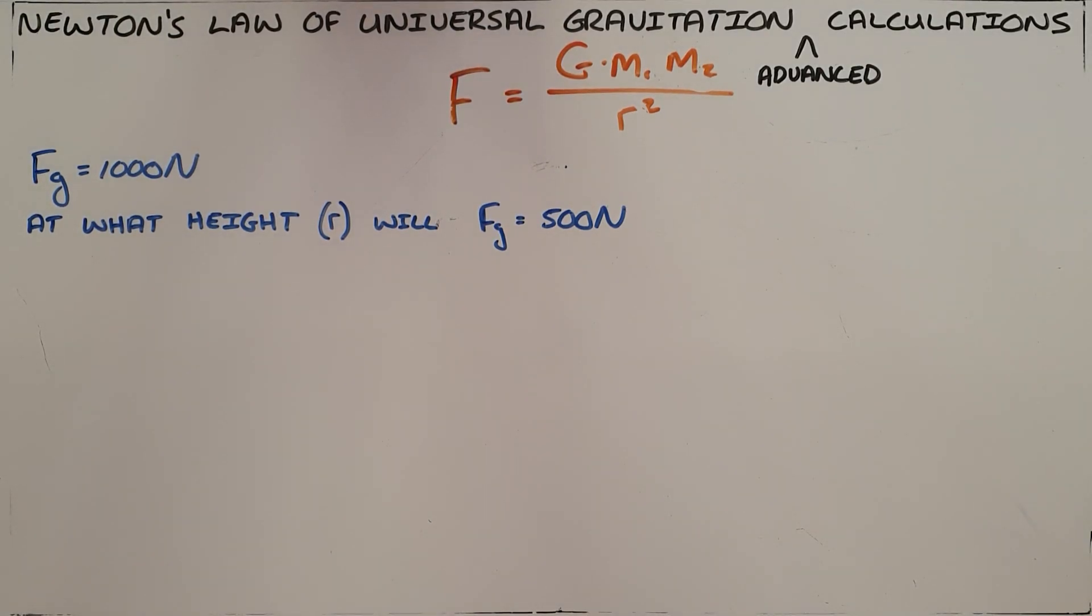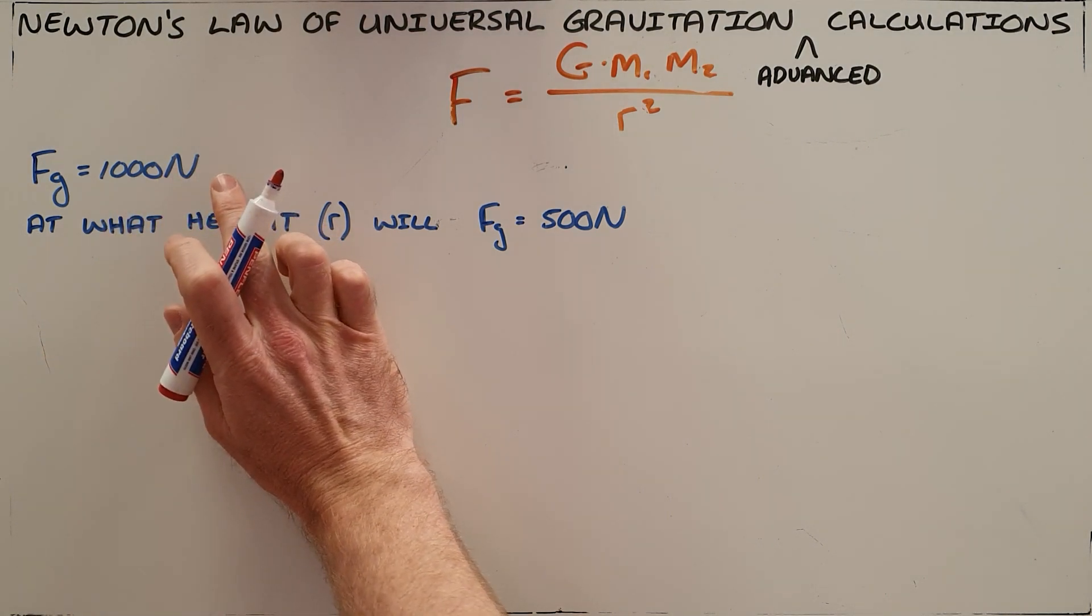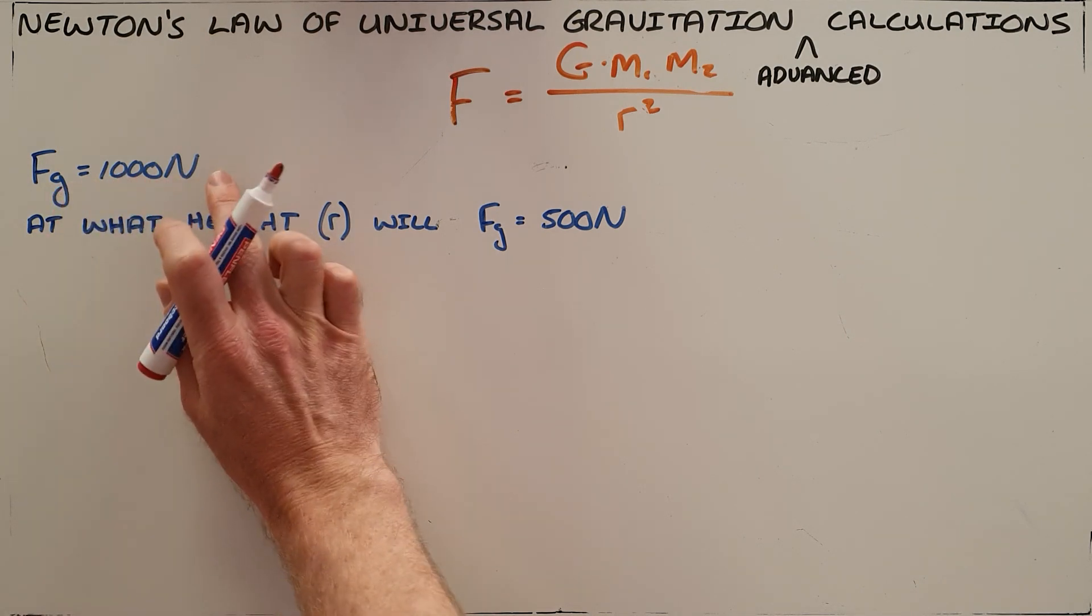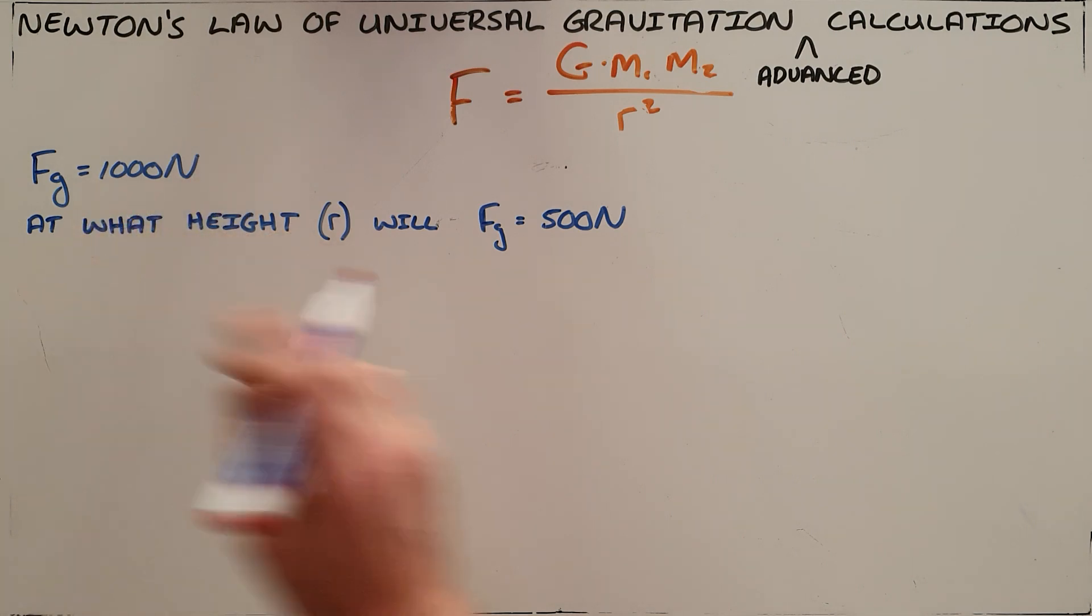A more advanced calculation for Newton's law of universal gravitation would be where you are told that a person or object has a gravitational force of 1000 newtons at the surface of the earth, and then you are asked at what height will that gravitational force be 500 newtons.